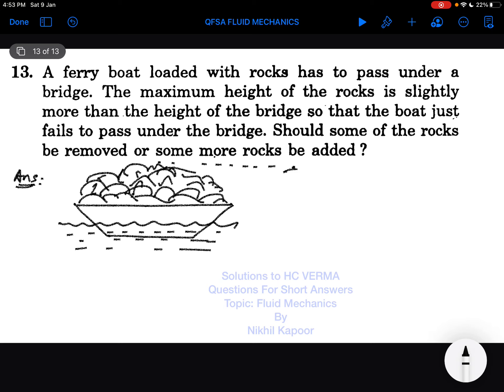So the boat has to pass through a bridge like this which is made here, but the maximum height of the rock is here so that it can easily hit the bridge which is made in the path.